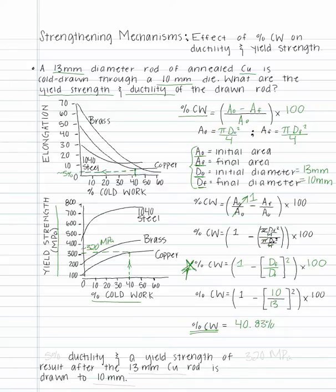Therefore, 5% ductility and a yield strength of 320 megapascals result after the 13 mm copper rod is drawn to 10 mm.